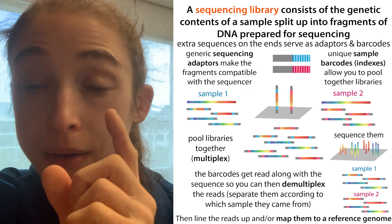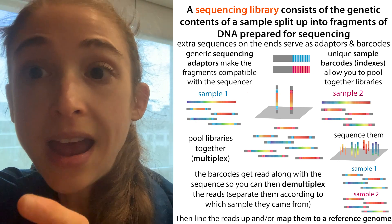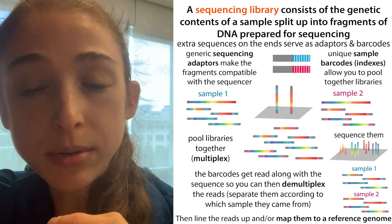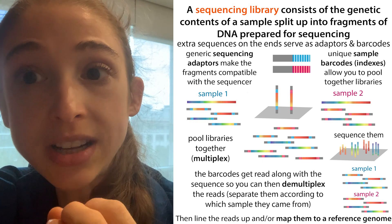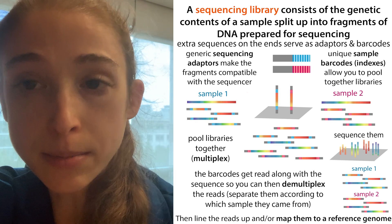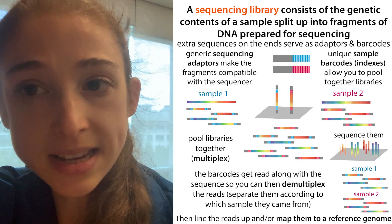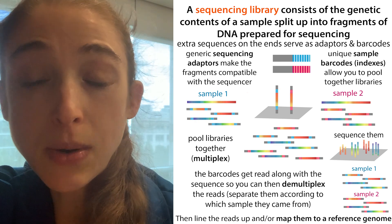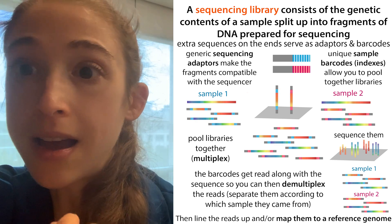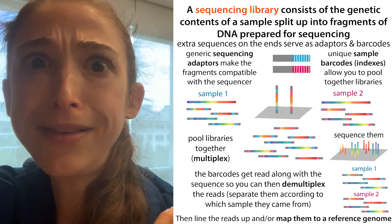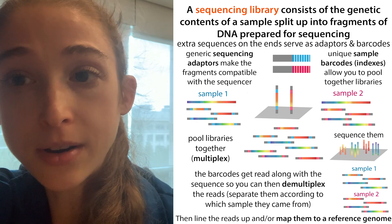These indexes allow you to identify the sample once you get all that data together. For each of the reads, you have associated indexes, and therefore you're able to know which sample it came from. This allows you to computationally demultiplex the samples. You can pool a lot of different samples together — the number of samples pooled together is referred to as the plexity.